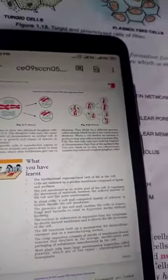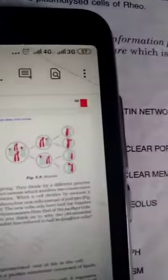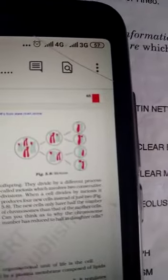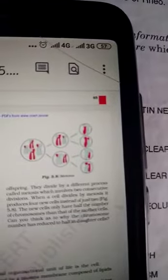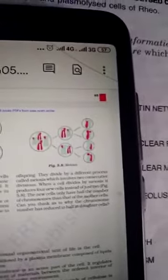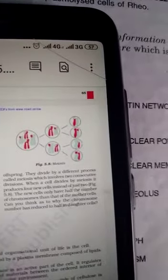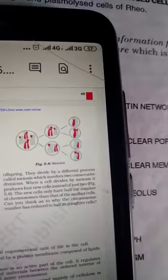In meiosis cell division, it is more complex. It is completed in two steps. In the first step, the number of chromosomes becomes half. That is called reduction division. And in the second step, just like mitosis, the cell divides into two and the chromosome number is similar.